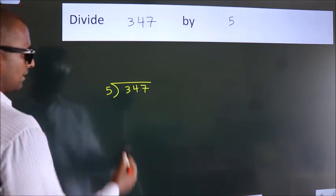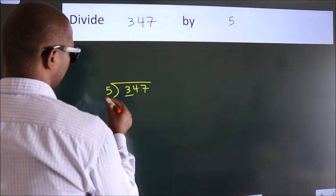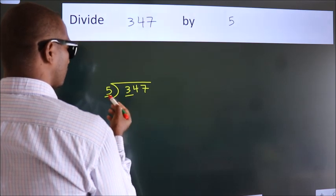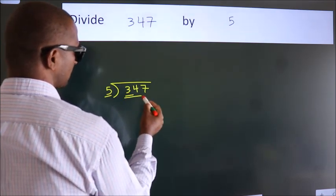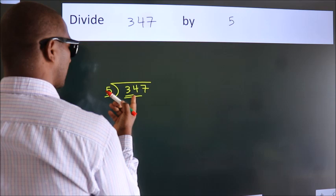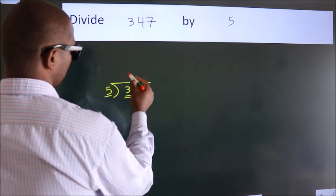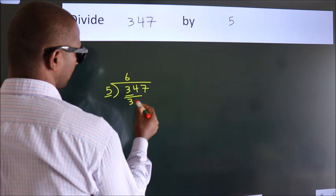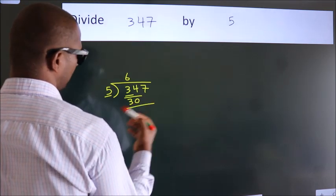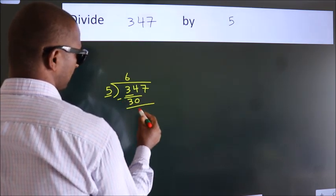Next, here we have 3, here 5. 3 is smaller than 5, so we should take 2 numbers: 34. A number close to 34 in the 5 table is 5 times 6 equals 30. Now we should subtract. We get 4.